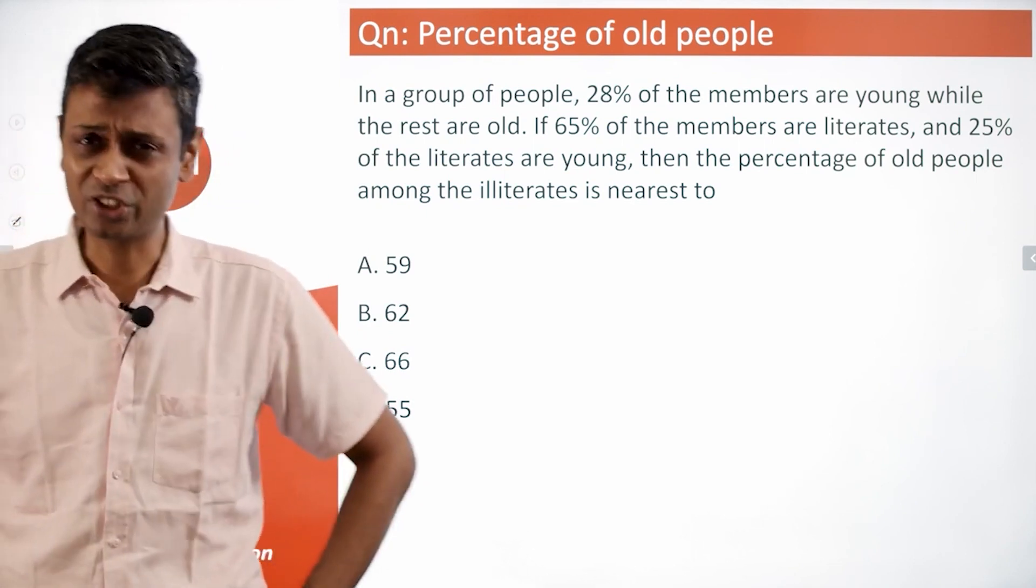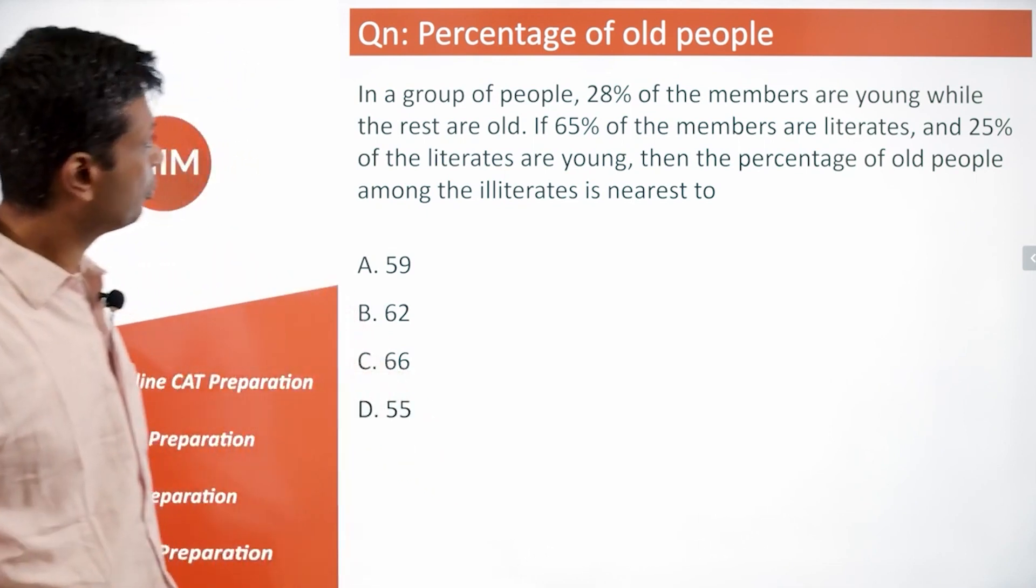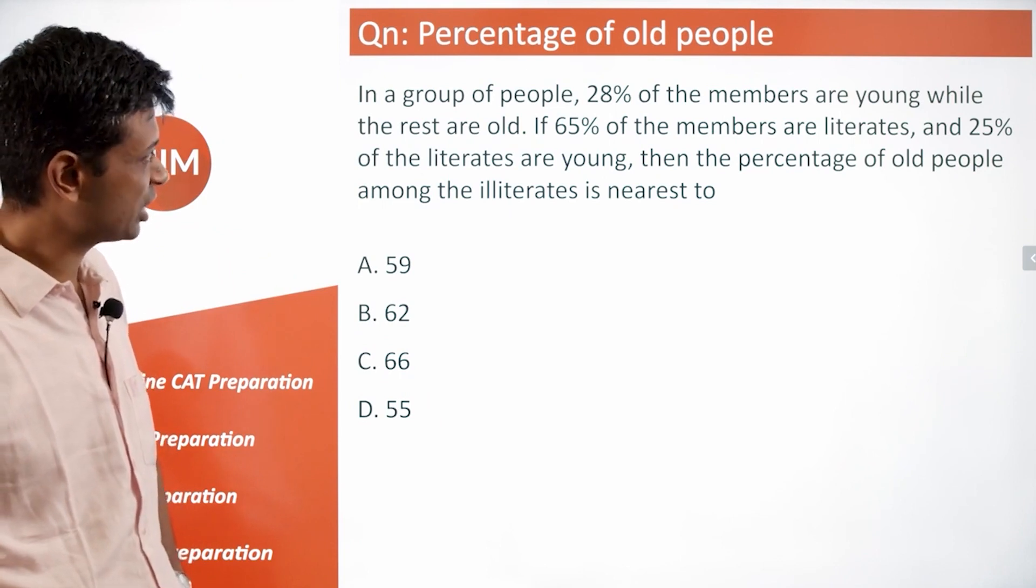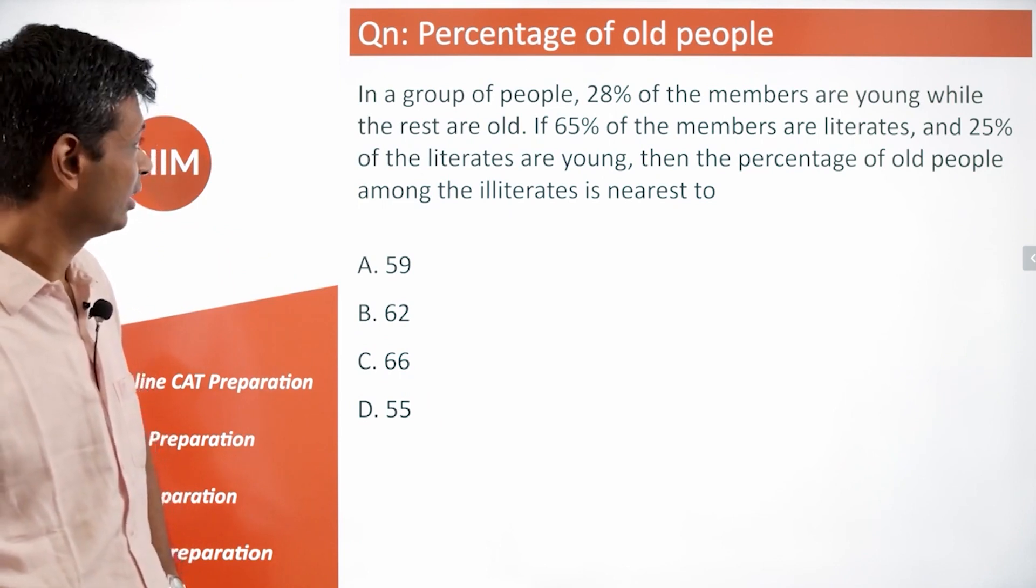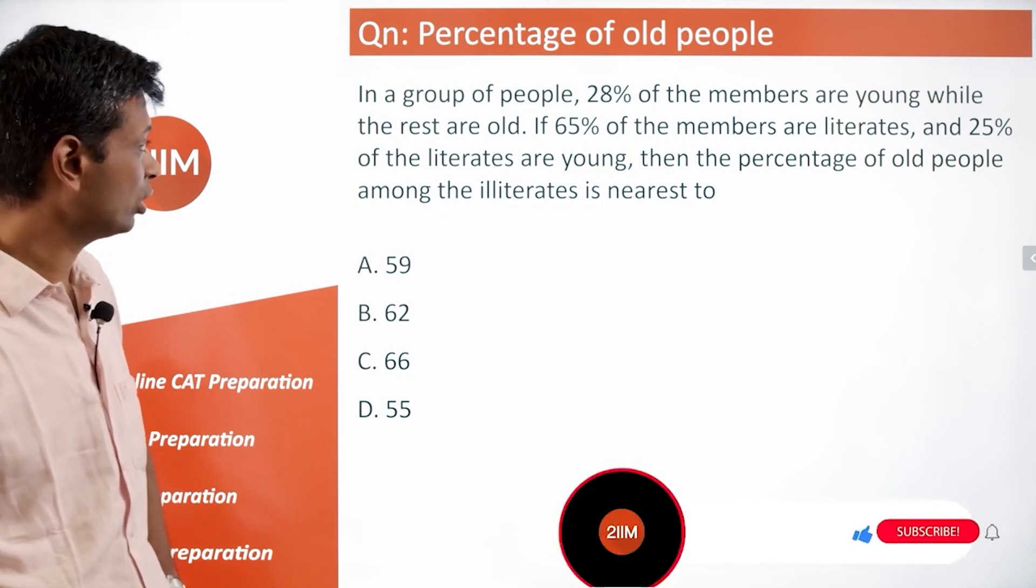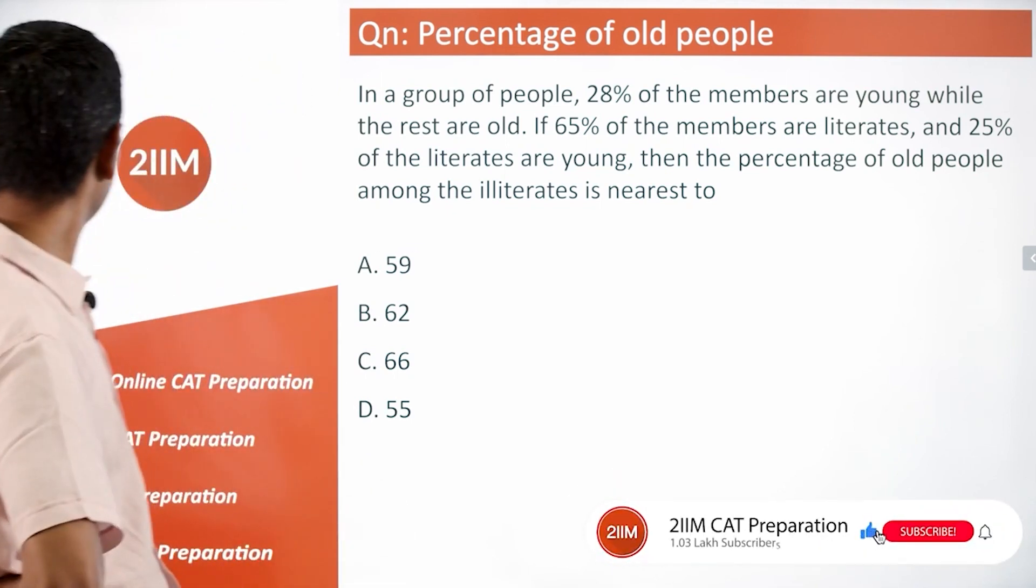Let's look at this problem with percentages. In a group of people, 28 percent of the members are young while the rest are old. 65 percent of the members are literates and 25 percent of the literates are young. The percentage of old people among the illiterates is nearest to what?